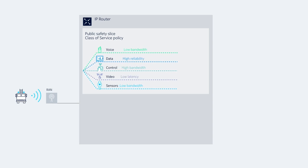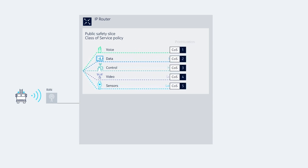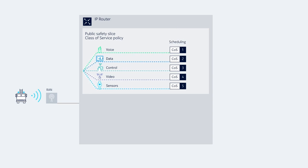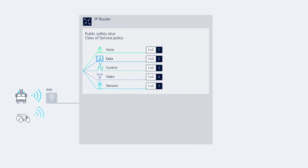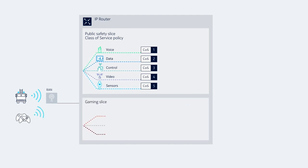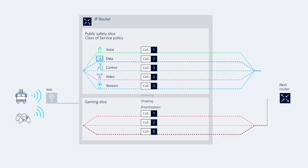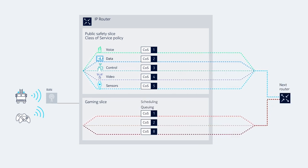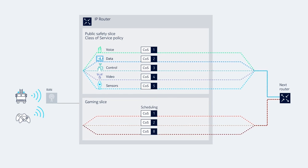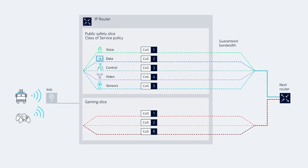Each application in the public safety slice has its own class of service, and is prioritized, shaped, queued, and scheduled as appropriate, based on the SLA. Each slice is guaranteed its own SLA across the transport network, keeping the traffic on each slice separate and preventing competition for bandwidth or priority.